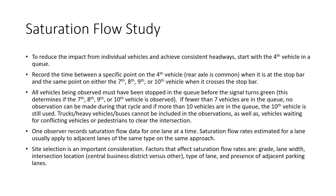Trucks, heavy vehicles, and buses cannot be included in the observations. If a heavy vehicle is present in the seventh position or earlier in the queue, you cannot make the observation. However, if a truck was the eighth vehicle in the queue, you would stop your observation at the seventh and use that seventh vehicle in these observations.